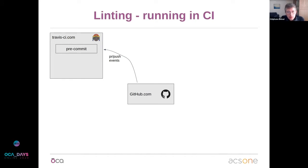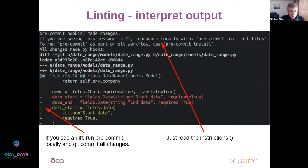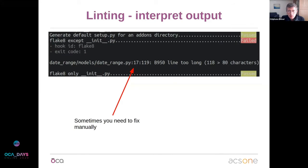Pre-commit is integrated via the copier template. Travis receives push and pull request events from GitHub and runs pre-commit as one of its jobs. In the Travis log you'll see which checks passed and which failed. If a formatter modified files, you'll get a diff at the end of the job — rerun locally, commit, and push. To save Travis time, there's no reason to get a red build on pre-commit, so run it locally before pushing.